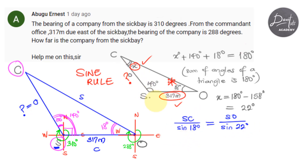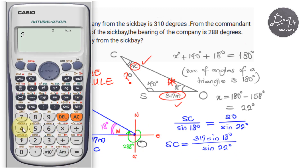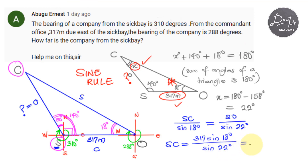We make SC the subject: SC equals SO times sin 18 degrees, divided by sin 22 degrees. SO is 317 meters, so SC equals 317 times sin 18, divided by sin 22. Using a calculator: 317 multiplied by sin 18, close bracket, divided by sin 22, then press equals. The result is 261.5 meters. That is the distance between the company and the Seat Bay — 261.5 meters.